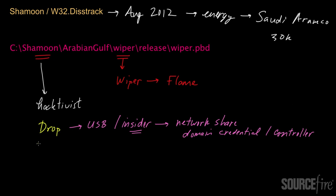Once the system was infected, Shamoon proceeded to wipe the system — deleting files in a specific order and with a specific structure in mind. It looked for specific kinds of folders, for example the Documents and Settings folder, the config folder, and folders associated with the user. It also tried to delete traces of itself to make itself harder to find.